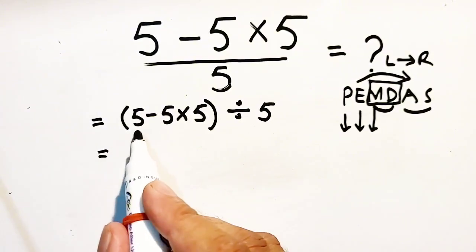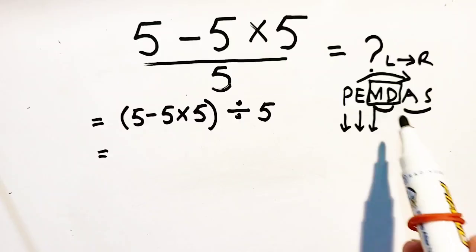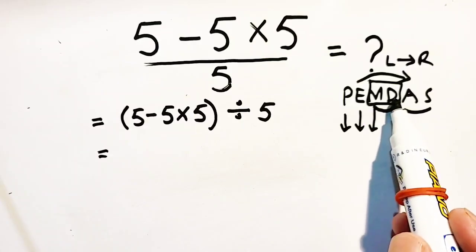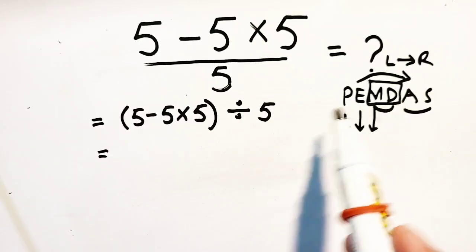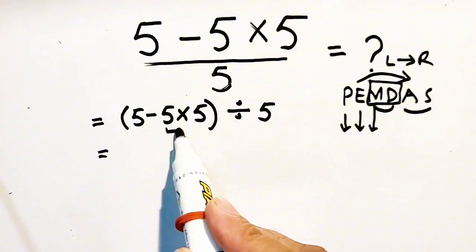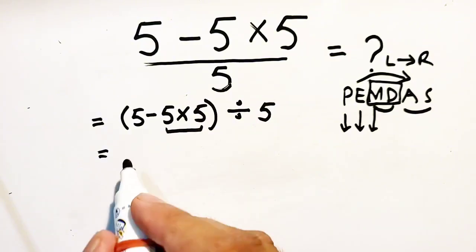So, multiplication and division. First of all, we will multiply these two numbers.